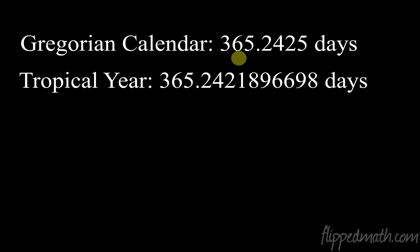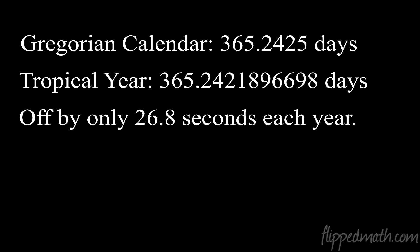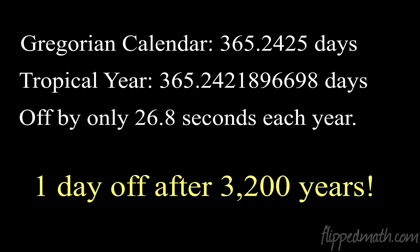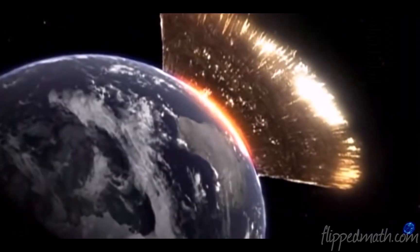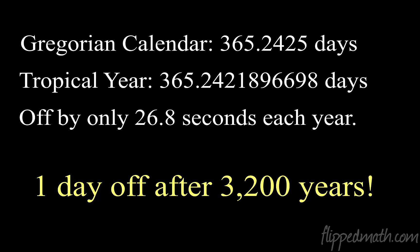Look how close that is to the tropical year: 365.2421 — you have to go four decimal places out before it differs from the Gregorian calendar. It's only off by 26.8 seconds per year, and it will take 3,200 years before we're even off by one day. That means we don't need to make any adjustment to our calendar system for about 48,000 years — assuming we can avoid an alien invasion or a meteor strike.